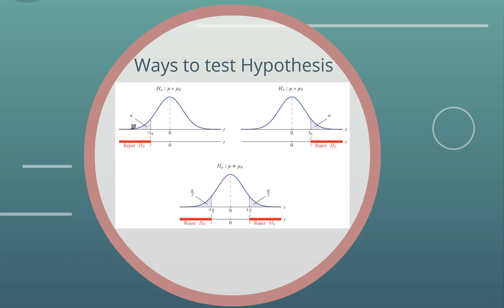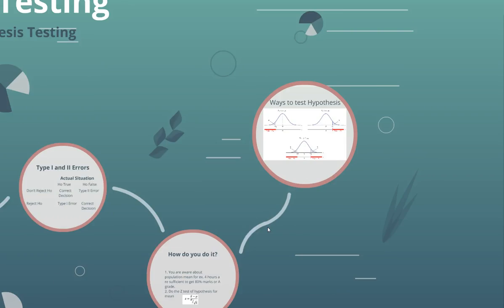For a right-tailed test, you accept H₀ if the statistic falls below the critical value from the Z-table, and reject it if it falls above. For a two-tailed test, if the statistic falls in the acceptance region in the middle you accept H₀; if it falls in the rejection regions on either side, you reject it. We will do more practical work in the next videos on how to test and accept or reject hypotheses by putting this theory into action.